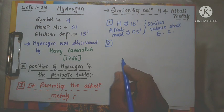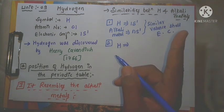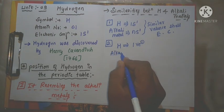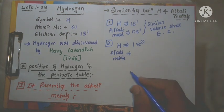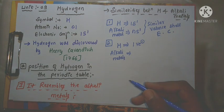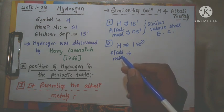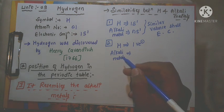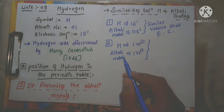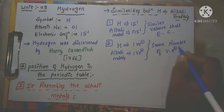The second similarity: hydrogen has one valence electron, since its atomic number is 1 and the single electron is in the first shell. Similarly, alkali metals — lithium, sodium, potassium, rubidium, cesium — also have only one valence electron. Therefore, both hydrogen and the alkali metals have the same number of valence electrons.